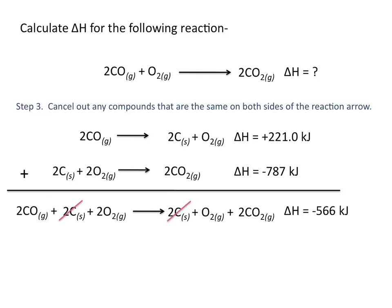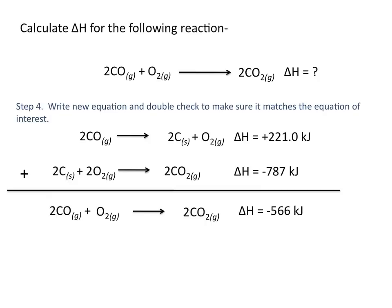I can cancel out my 2 moles of carbon on both the reactant and product sides. I can also cancel the 1 mole of O2 on the product side with 1 mole of O2 on the reactant side. This leaves the final equation: 2 CO plus O2 goes to 2 CO2.